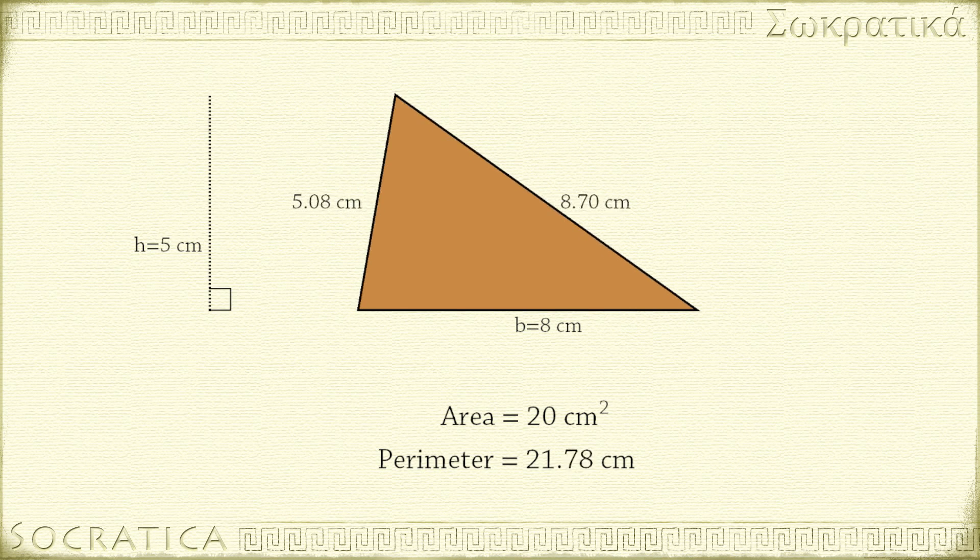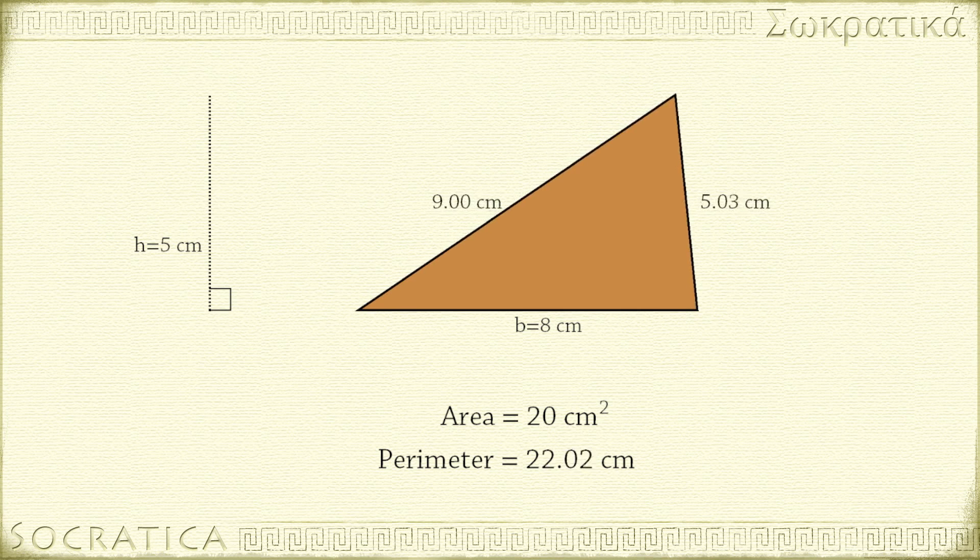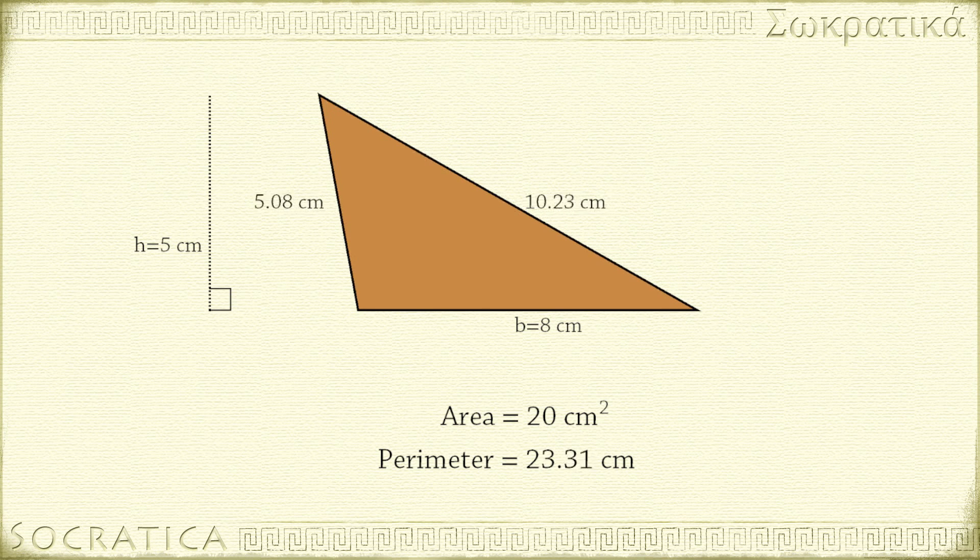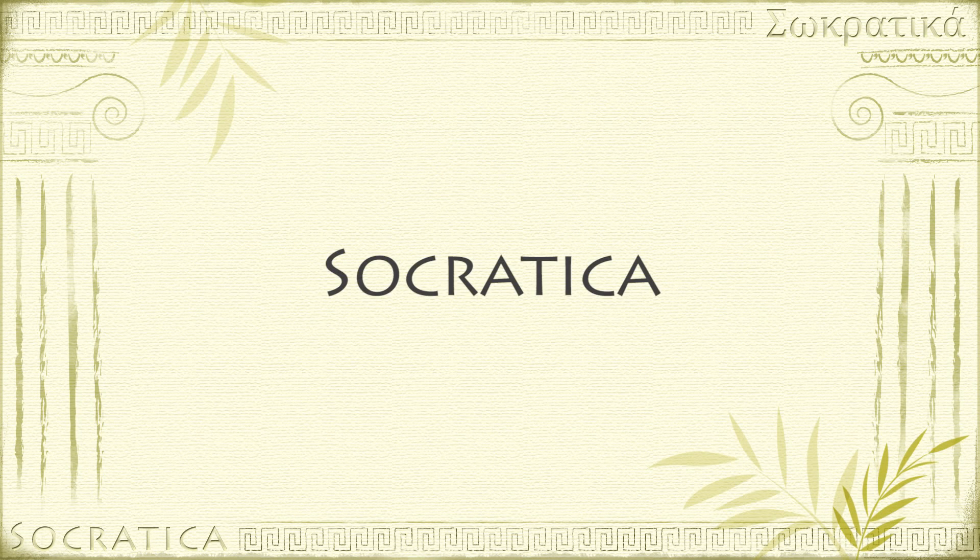If we keep the base and height fixed but move the top vertex left and right, then the perimeter changes but the area remains the same.